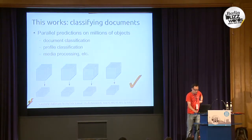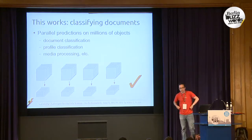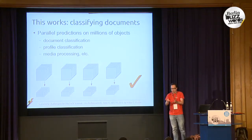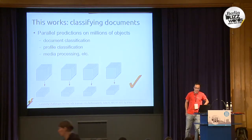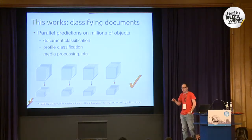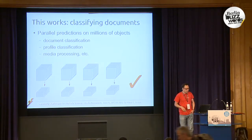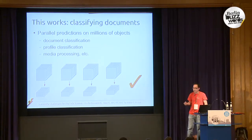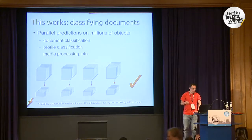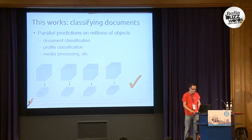There's one example that works very well in production: if you want to classify something — say you've learned a classifier that can classify 15 billion documents into categories — you can do this very easily by just separating the data and doing only a map step, no reduce step needed. Or if you have media to convert, or search — MapReduce was originally invented by Google to do search, so that works very well too.